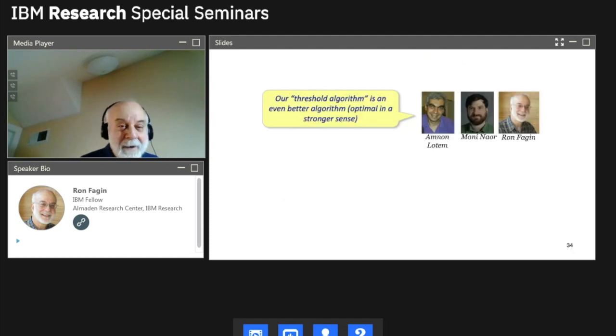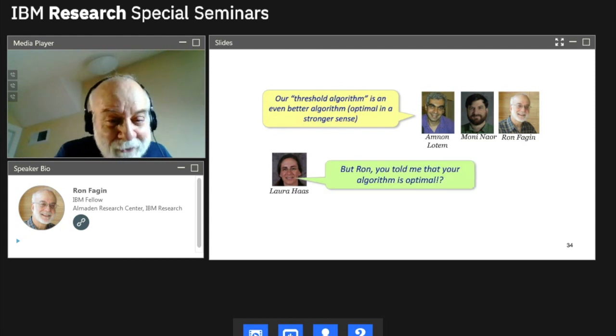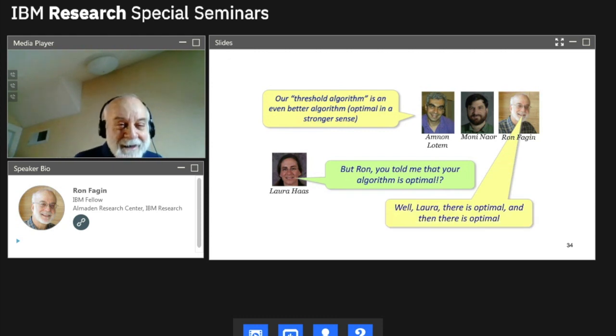So then, great. I went to Laura and said, Laura, new algorithm, threshold algorithm, even better than Fagin's algorithm, because optimal in a stronger sense. It's not a worst case sense, the usual method or average case. But in every case is optimal at every instance. And Laura said, Ron, we implemented your algorithm all over the place. You told me it was optimal. What's going on? I said, well, Laura, there's optimal and then there's optimal. So that was the way it was.